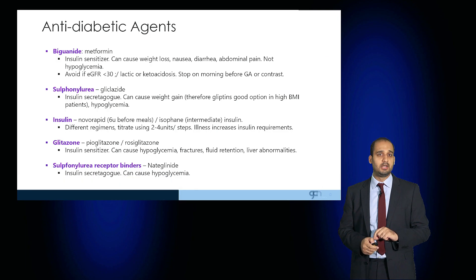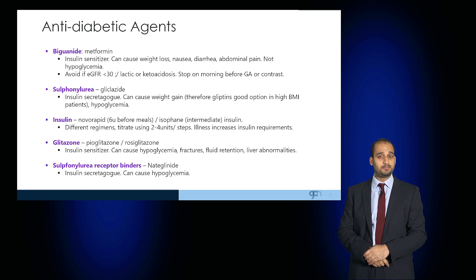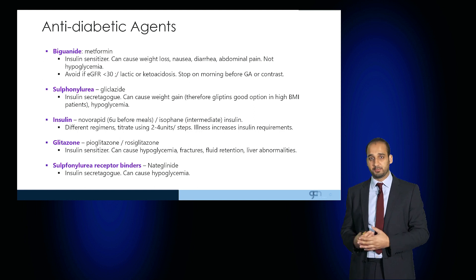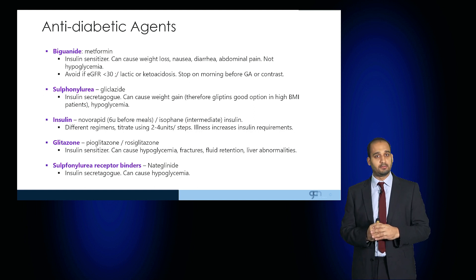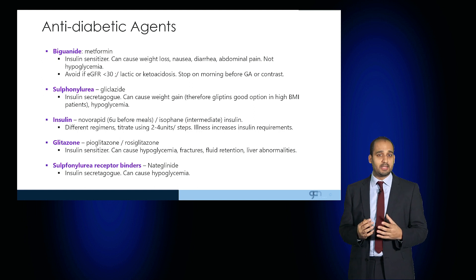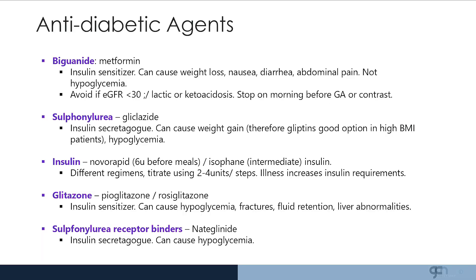Focusing on specific drugs: metformin is a biguanide and an insulin sensitizer that can cause weight loss, making it useful in obese patients, but it can cause nausea, diarrhoea and abdominal pain — in which case switch from standard to modified release. It cannot be used in advanced kidney disease or lactic or ketoacidosis. Sulfonylureas such as gliclazide are insulin secretagogues; as insulin is a growth factor, they can cause weight gain and sudden hypoglycemia.